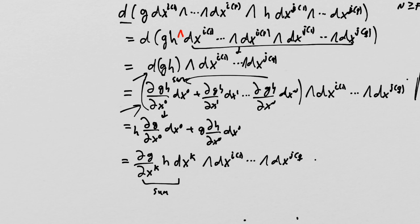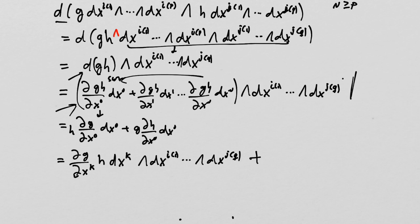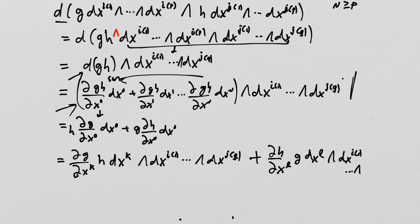So with that, we're done with the formal introduction of the exterior derivative. We showed that the most elementary piece is that the exterior derivative of a function acting on a vector equals the vector acting on the function. We stipulated the anti-derivation property and d² = 0, showed the exterior derivative is unique given these properties, found the explicit formula for d(omega), and verified it satisfies both rules.